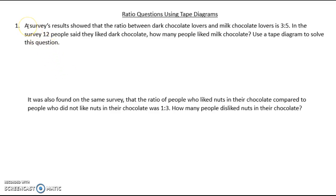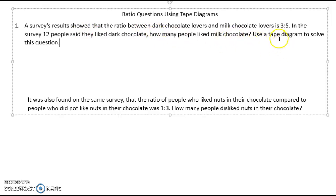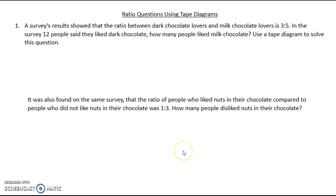So I have this problem here — it's about a survey. The survey results show that the ratio between dark chocolate lovers and milk chocolate lovers is 3 to 5. In this survey, 12 people said they like dark chocolate, and I'm asking how many people like milk chocolate. I'd like us to use a tape diagram to solve this problem. I also have a follow-up problem using that same survey information, and we'll get to that in a minute.